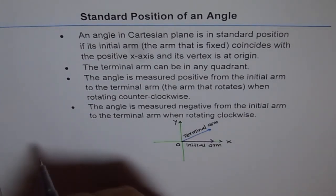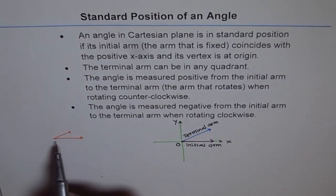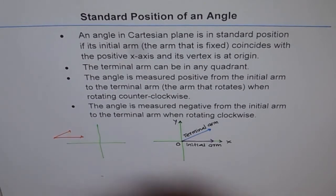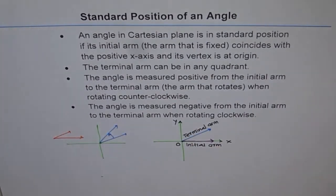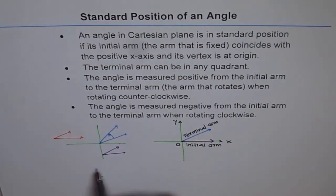If I make an angle elsewhere, it is not in standard position unless I define a coordinate system and specifically say this is my x-axis and that is the origin. Even if I draw a coordinate axis but draw my angle such that the initial arm does not coincide with the x-axis, that angle is not in standard position. Similarly, if the vertex is not at the origin, it is also not in standard position.